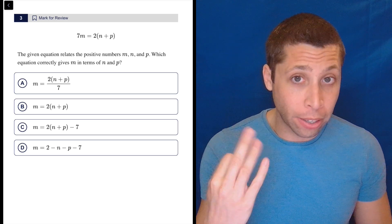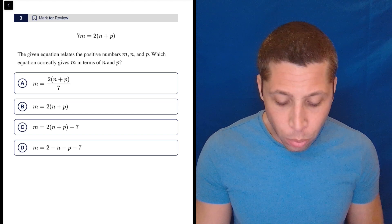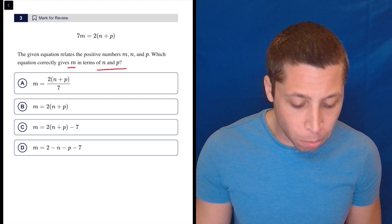They're giving you this equation with three letters. That's not so bad because they're not asking us to solve anything. Which equation correctly gives M in terms of N and P?